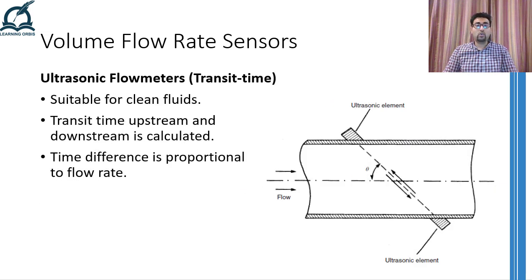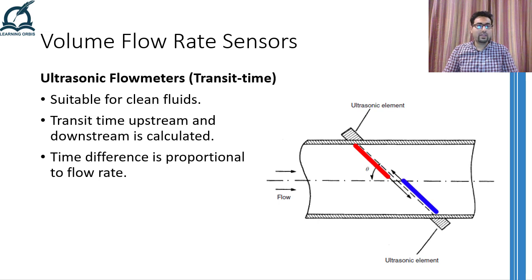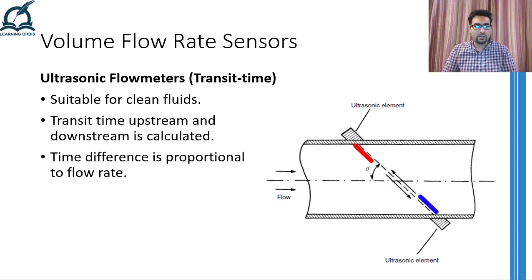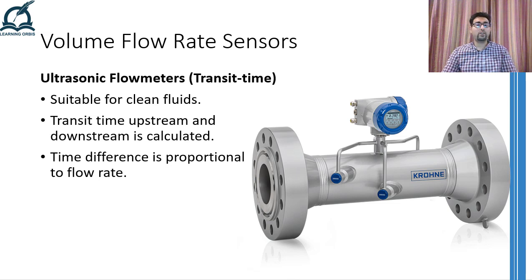The other type of ultrasonic flow meters, called transit time flow meters, are perfect for measuring the flow rate of clean, smooth-flowing fluids. In this case, two ultrasonic transceiver pairs are used. The transmitter in both pairs transmits ultrasonic waves at an angle through the fluid moving in the pipe, whereas the receiver receives the wave transmitted by the transmitter of the other transceiver pair, as shown in the schematic. The ultrasonic wave traveling downstream will take less time to travel from transmitter to receiver compared to the wave traveling upstream. This time difference is directly proportional to the flow rate, and multiplying by the cross-sectional area of the pipe gives us the volume flow rate.